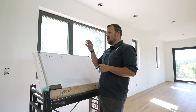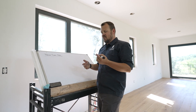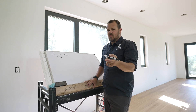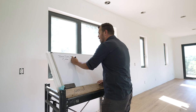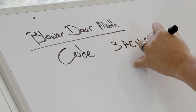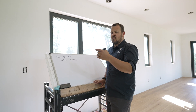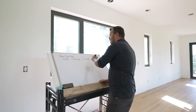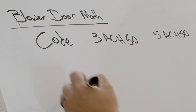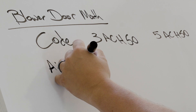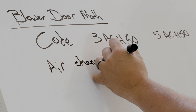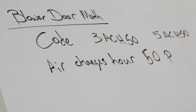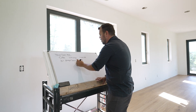We have to start the blower door conversation with what code says. The 2021 code changed — in my market it's 3 ACH50, and the new code for the whole nation is 5 ACH50. That means air changes per hour at 50 pascals of pressure.